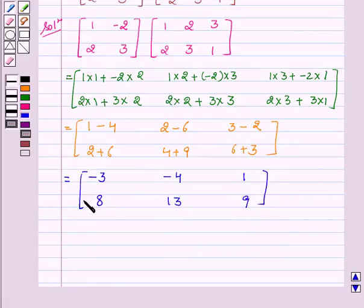Therefore, the product of the two given matrices is equal to minus 3, minus 4, 1, 8, 13, 9, which is the required answer.